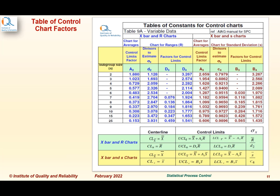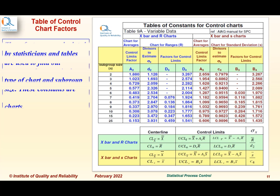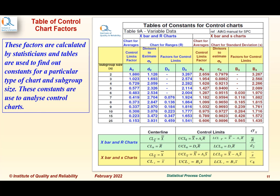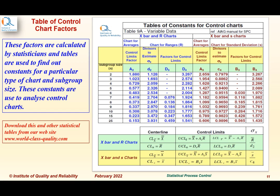This is a table of constants for control charts. These factors are calculated by statisticians and tables are used to find constants for a particular type of chart and subgroup size. These constants are used to analyze control charts. Download this and other statistical tables from our website www.world-class-quality.com. The red box shows the constants we are going to use to analyze X-bar and range control charts.